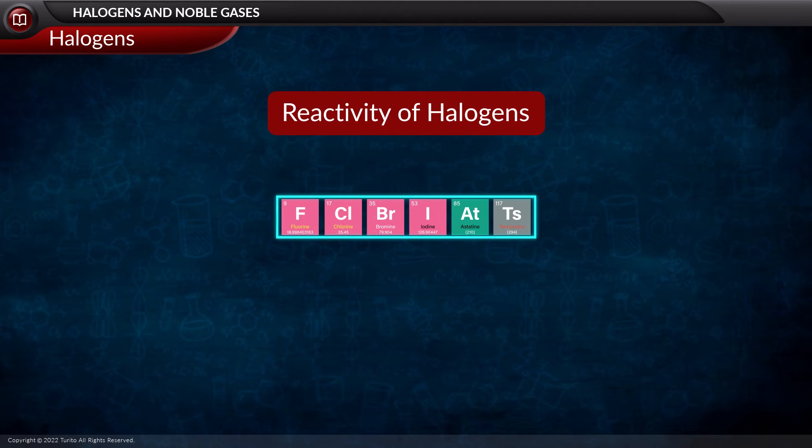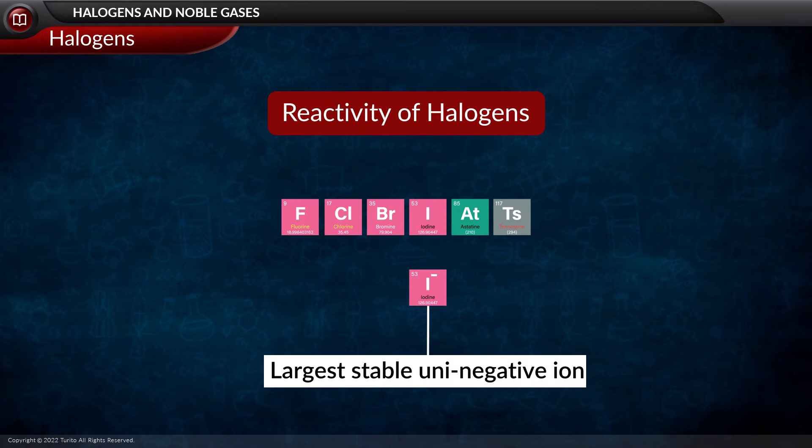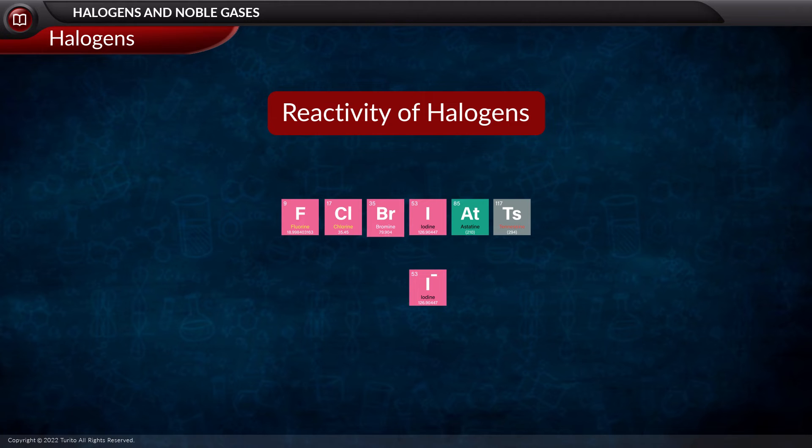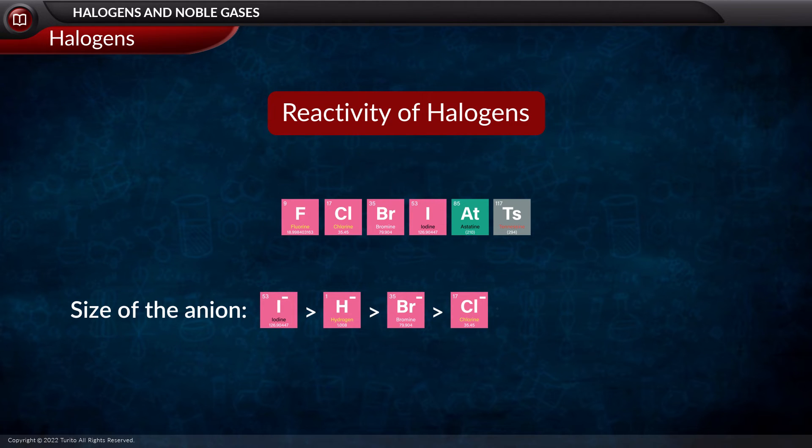Now halogens easily form anions and their radii are quite large. I minus is the largest stable uninegative ion present. The second largest uninegative ion is not Br minus but H minus, followed by Br minus, then Cl minus, and then F minus.